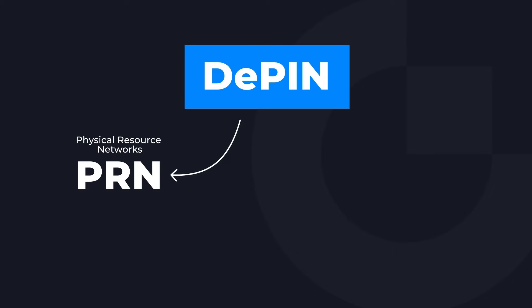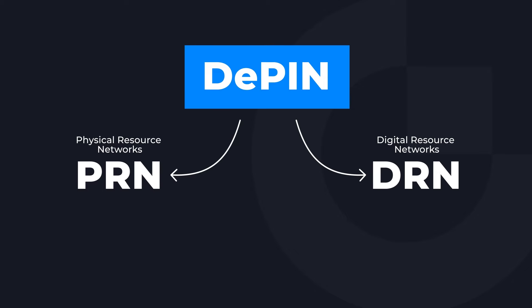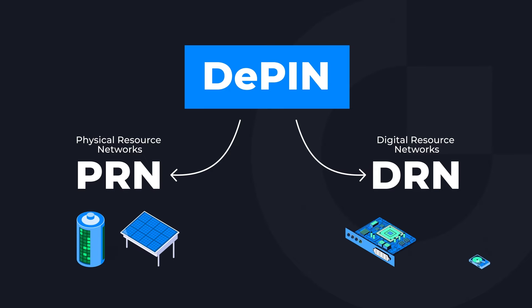There are two main categories of DePINs outlined by the Messari Crypto Thesis 2024 report. The first is Physical Resource Networks, or PRNs, and the second is Digital Resource Networks, or DRNs. PRNs reward participants for deploying location-dependent hardware such as energy grids or sensors, while DRNs offer location-independent services like storage and computing power, accessible worldwide.